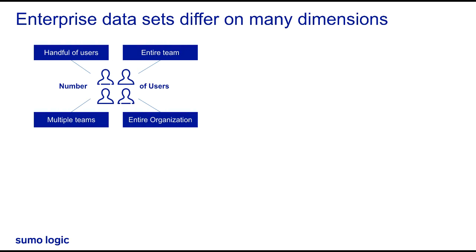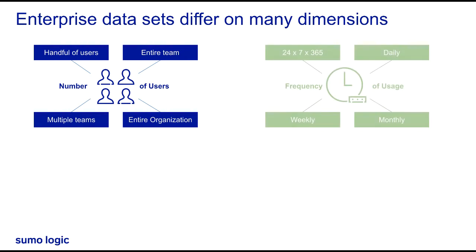Next is the frequency in which we access data. We may have some data that we're accessing on a daily basis, like production-type logs, and other data that we may only access weekly or monthly. For example, a security compliance or audit-type scenario happens pretty infrequently.